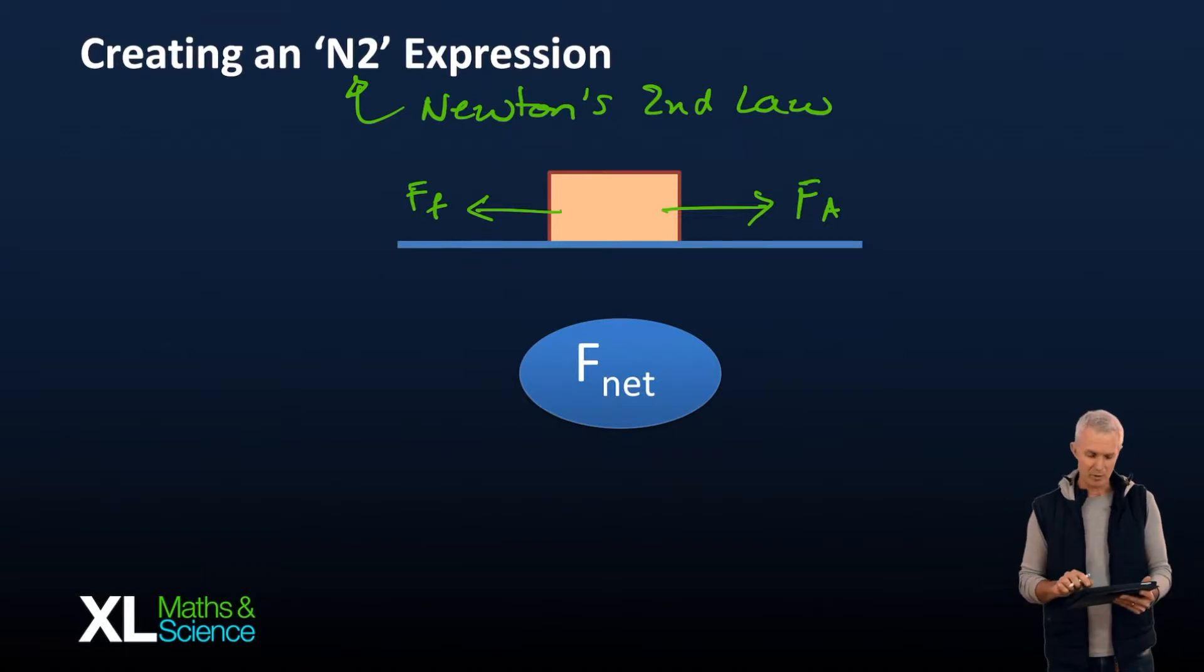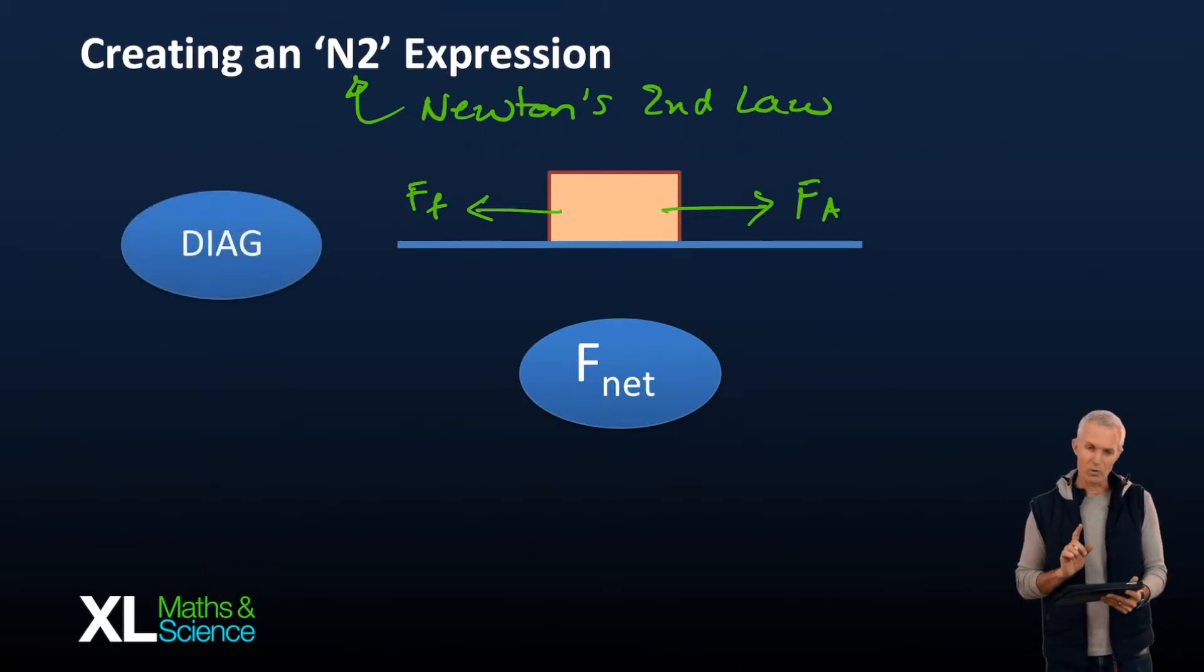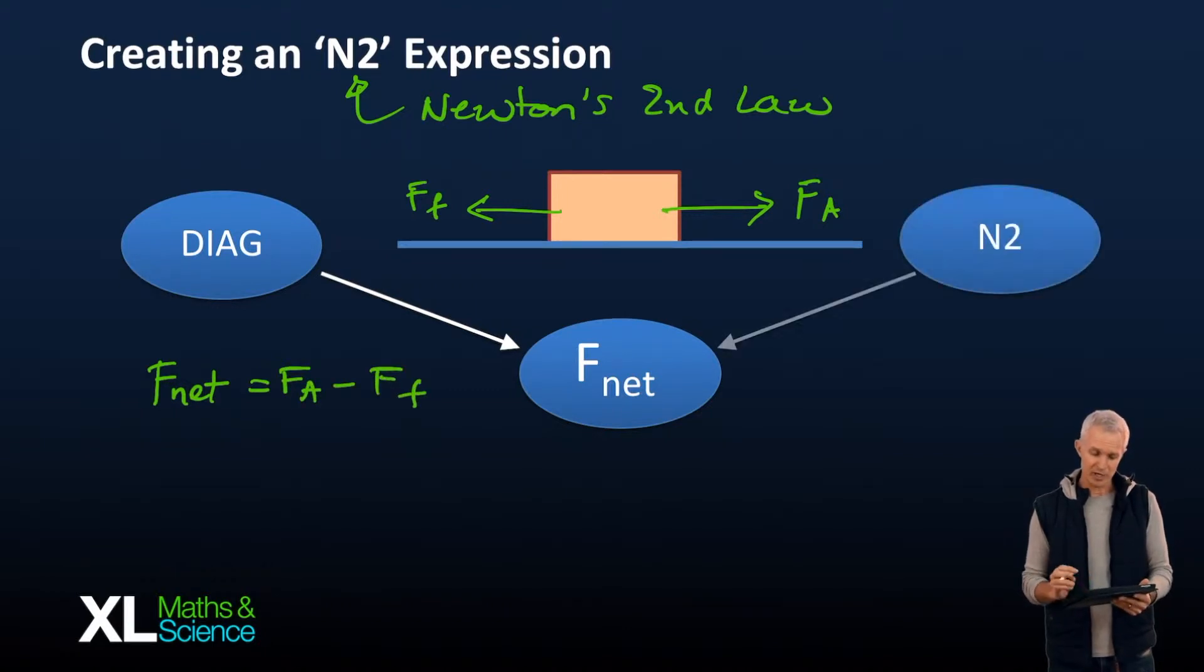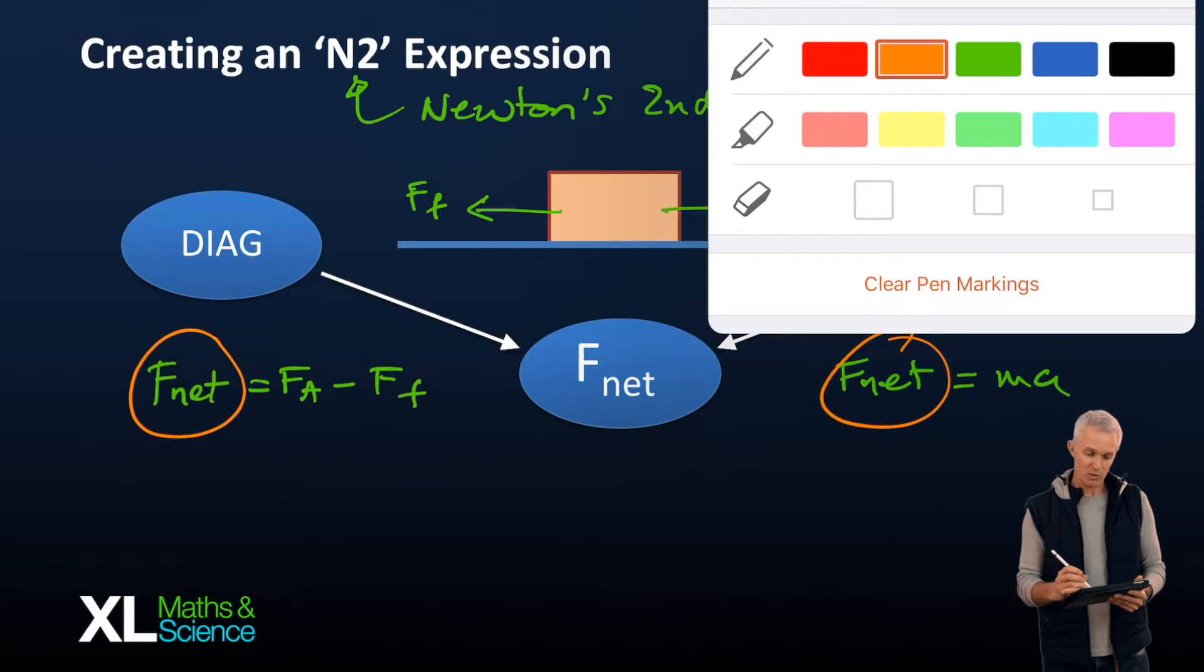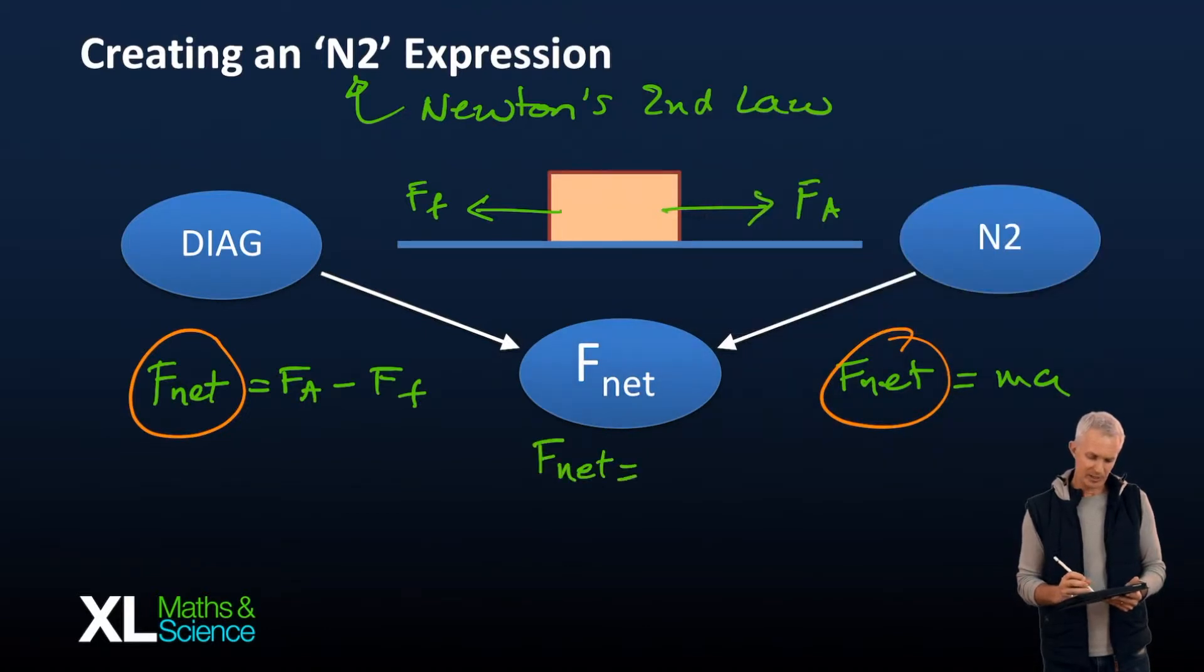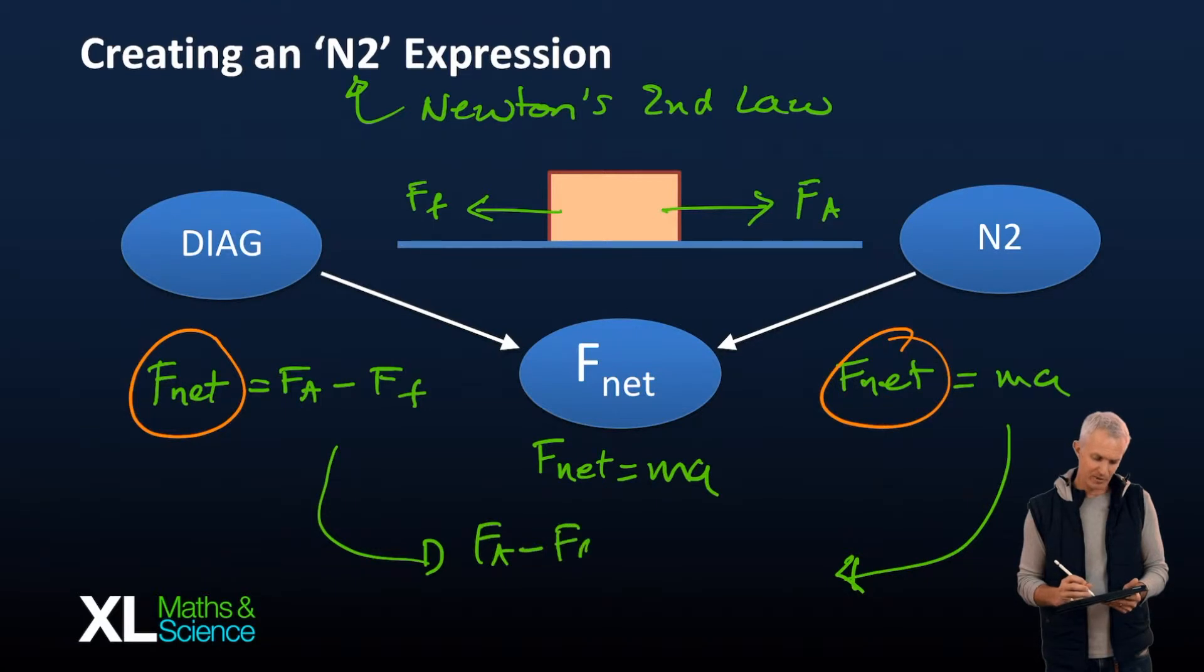Well there's actually two ways and this is what we do when we bring this expression together. On the one hand, we've got our diagram which can give us an expression for F net just like we did there. It's the applied force minus the frictional force. Then, of course, we've got Newton's second law itself, F net equals MA. Now both of those are expressions for F net, so they're exactly equal to each other. So in our working, we'd usually start with F net equals MA itself and then bring together these two things and say FA minus FF equals MA. There's our expression.